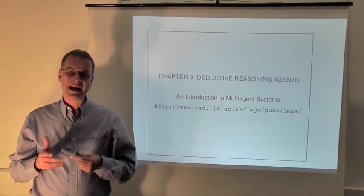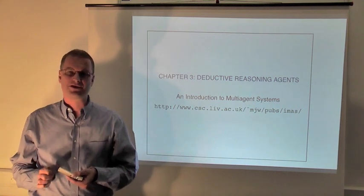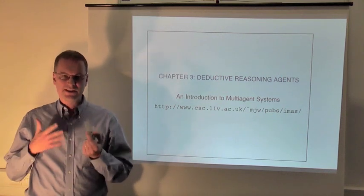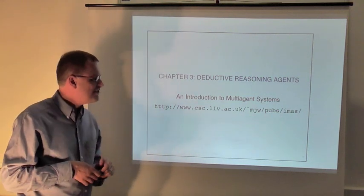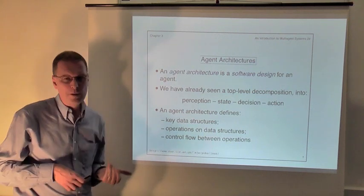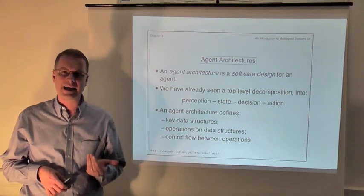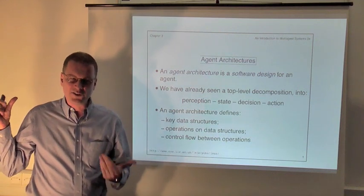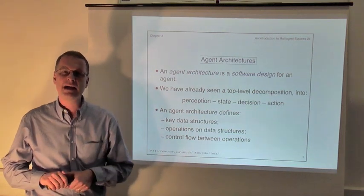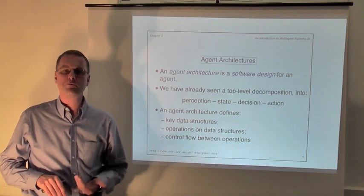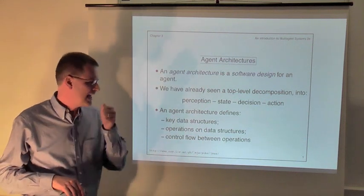So far in these videos, we haven't really given a good answer to the question of how does an agent actually make a decision. So that's the issue we're going to start digging into, and this is the area of agent architectures. When we talk about an agent architecture, what we're talking about is a software design for an agent — a software architecture intended to support decision-making with the properties we've been talking about previously: reactive, proactive, and autonomous behaviour.